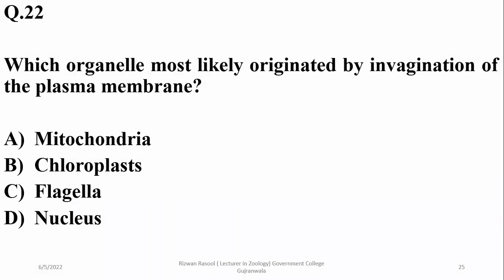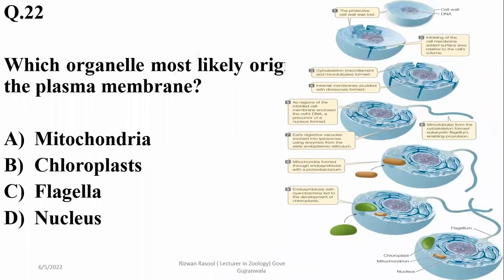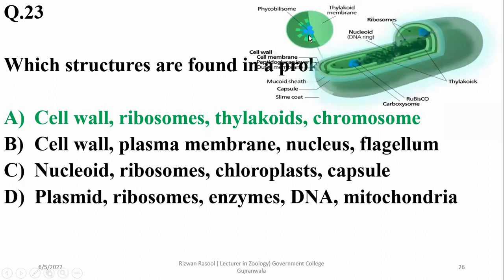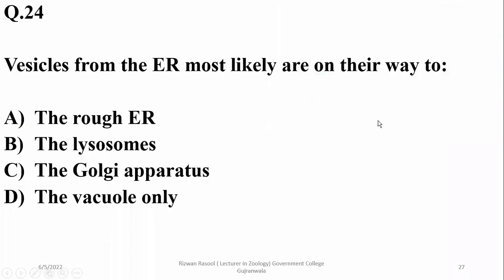Question 22: Which organelle most likely originated by invagination of the plasma membrane? Mitochondria, chloroplasts, and flagella cannot be explained by invagination alone. The nucleus is comparatively more supported by the idea that invagination of the plasma membrane created foldings that covered the cell contents. Question 23: A structure found in prokaryotic cells — prokaryotic cells have cell wall, ribosomes, thylakoids, and chromosomes but no nucleus, chloroplast, or mitochondria. Thylakoids are present externally as invaginations of the cell membrane, similar to mesosomes — these invaginations are called thylakoids.